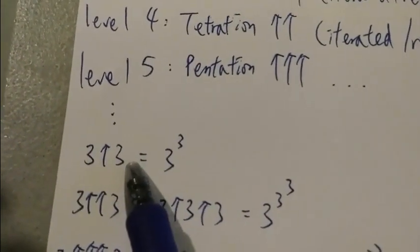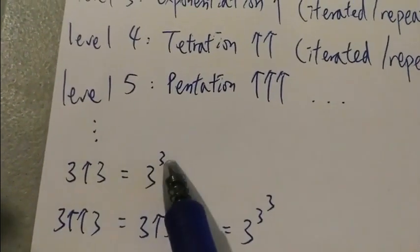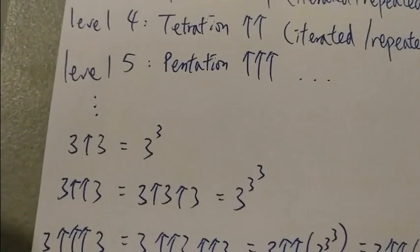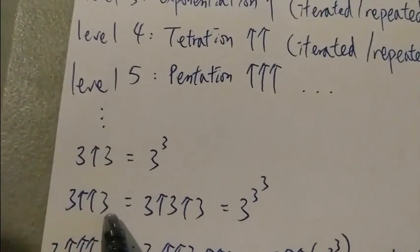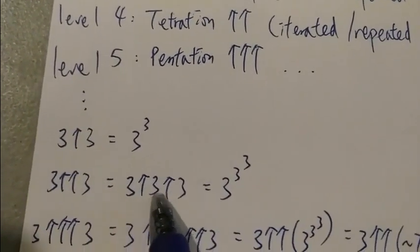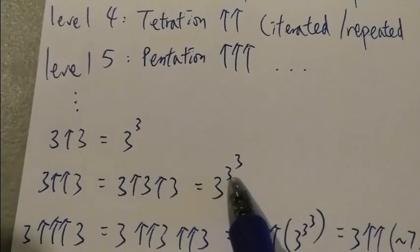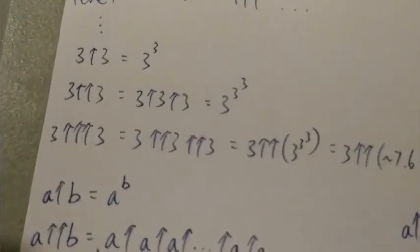So 3 arrow 3 just means 3 to the power of 3. And then for 3 double arrow 3, it means 3 arrow 3 arrow 3, which is equal to 3 to the power of 3 to the power of 3.